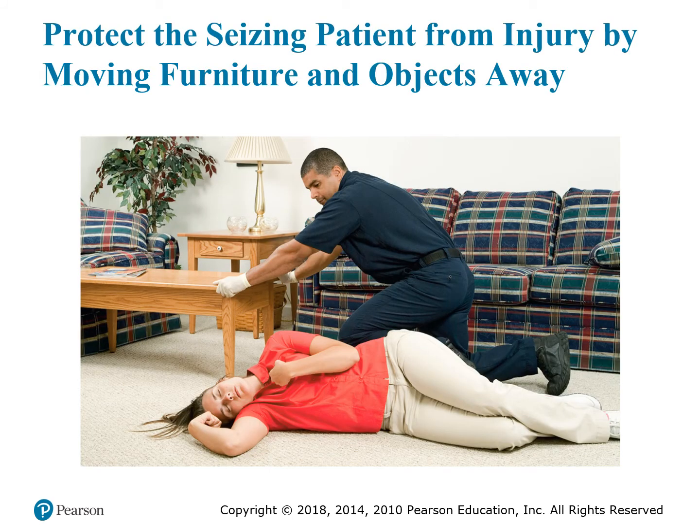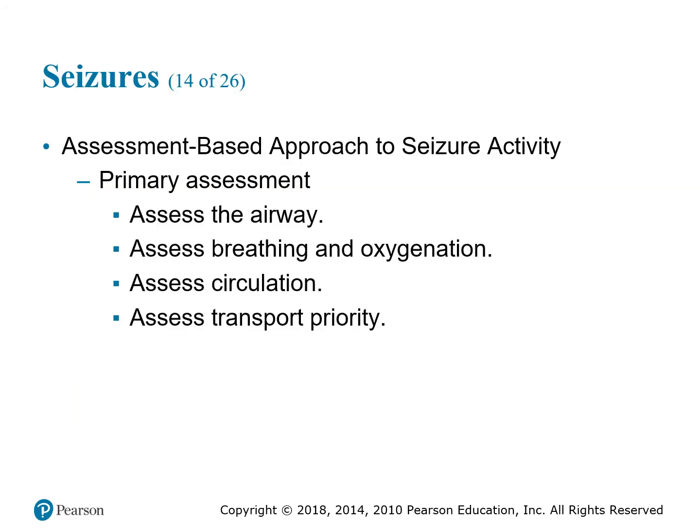For the primary assessment, assess the airway — it is common for patients to bite their tongue, so there can be bleeding in the airway. It is anatomically impossible to swallow their tongue, but be ready to suction for bleeding. Assess breathing and oxygenation, as these patients may be hypoxic — apply oxygen to get O2 levels up. Assess circulation including skin signs, color, moisture, temperature, and peripheral pulses.